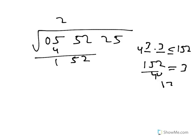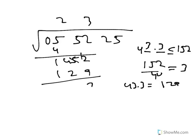Subtract, bring down the next two digits. Now don't double the three, double the 23. So now it's 460 blank times blank is equal to 2325.